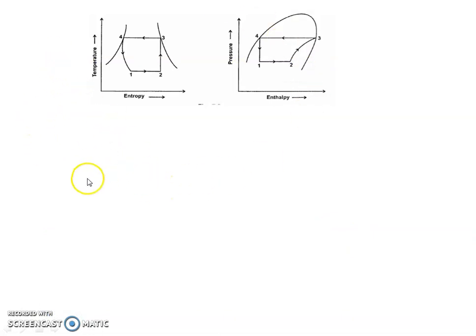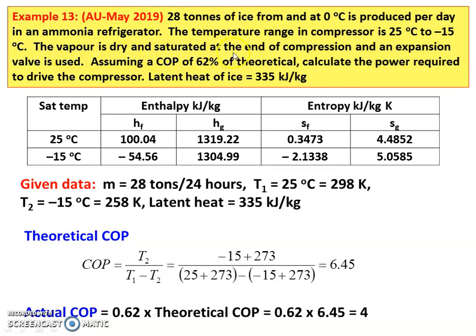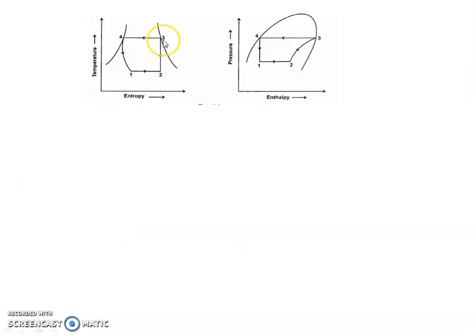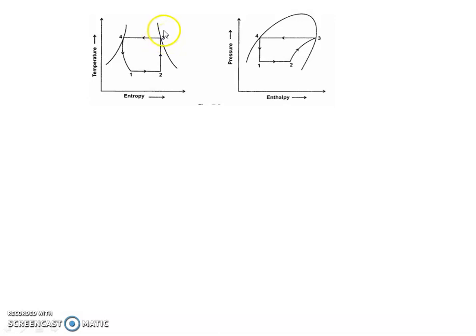This is the thermodynamic refrigeration cycle for the present situation. The vapor is dry saturated at the end of compression, which is point 3. Process 1 to 2 is the evaporator, 2 to 3 is the compressor, 3 to 4 is the condenser, and 4 to 1 is the expansion valve. This is shown on both the temperature-entropy diagram and the corresponding pressure-enthalpy diagram. Point 3 is on the saturated vapor line and point 4 is on the saturated liquid line.